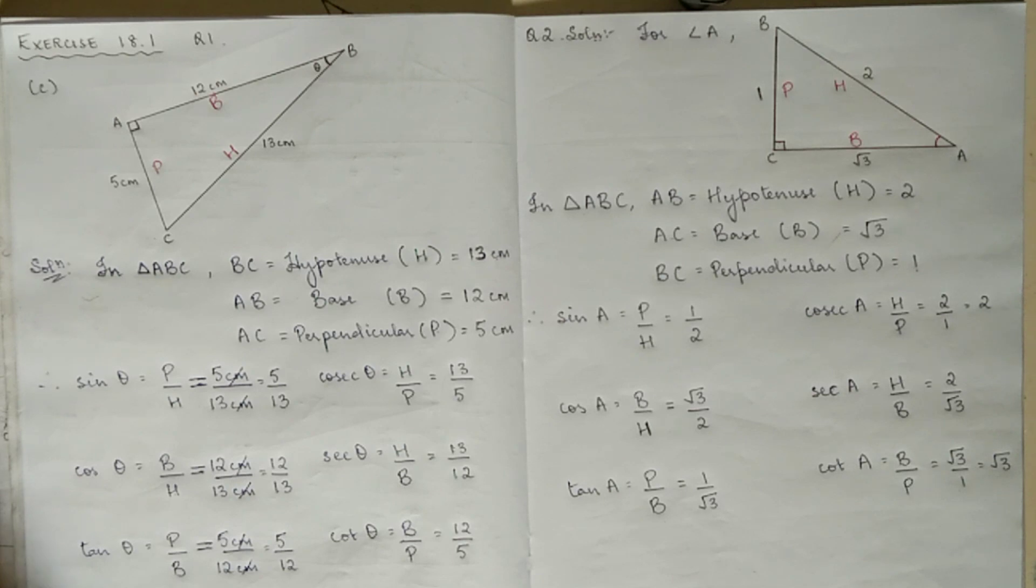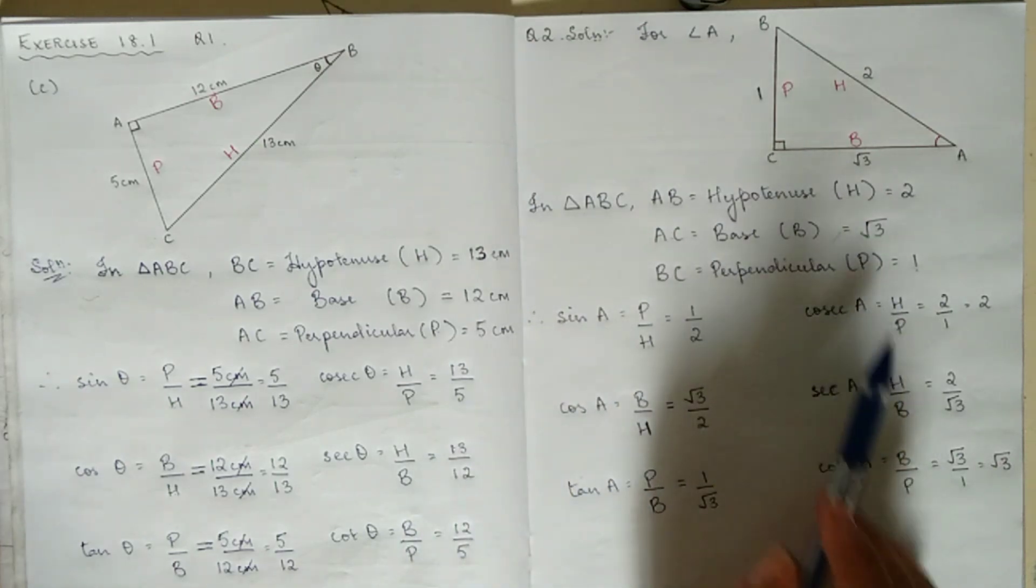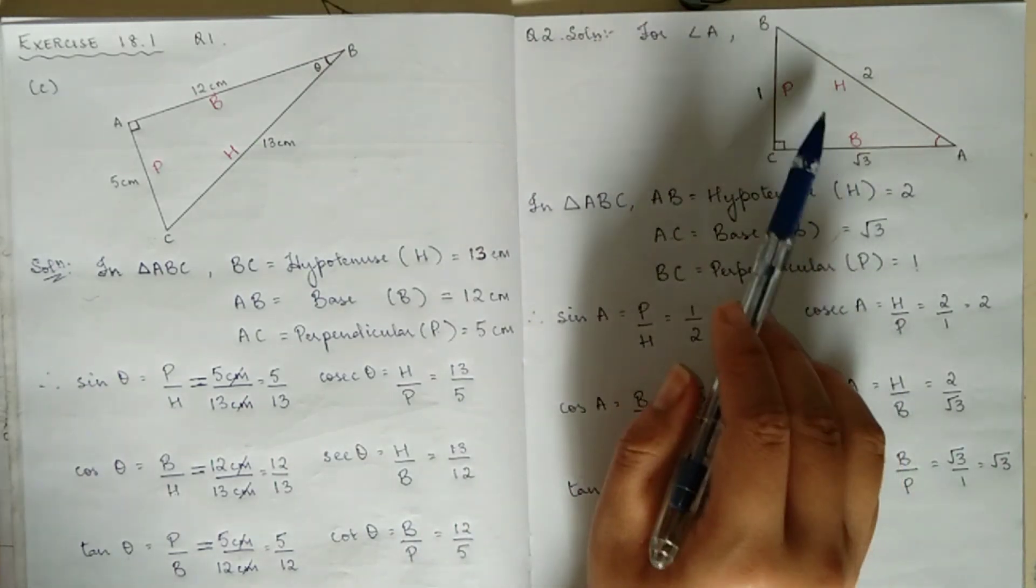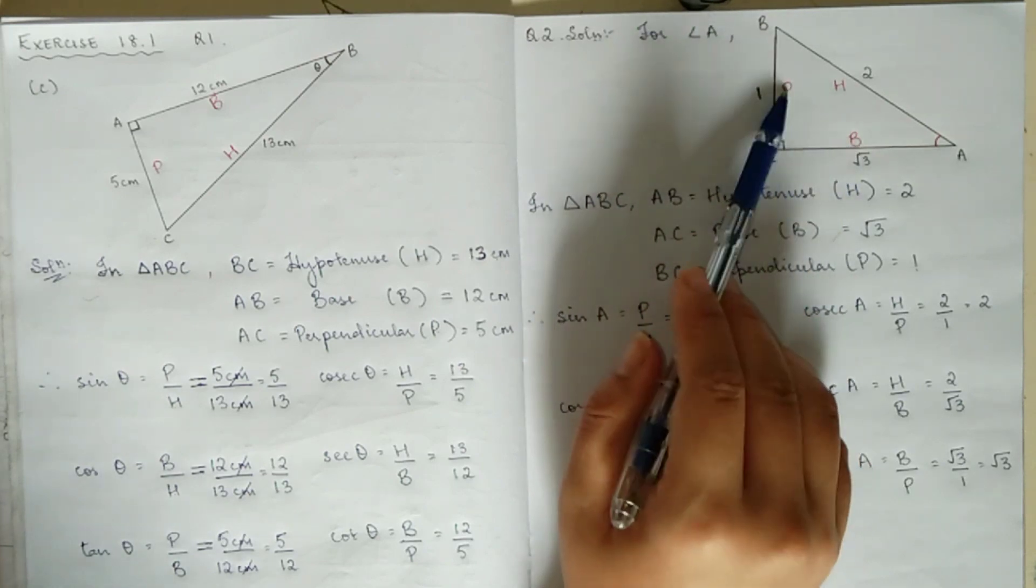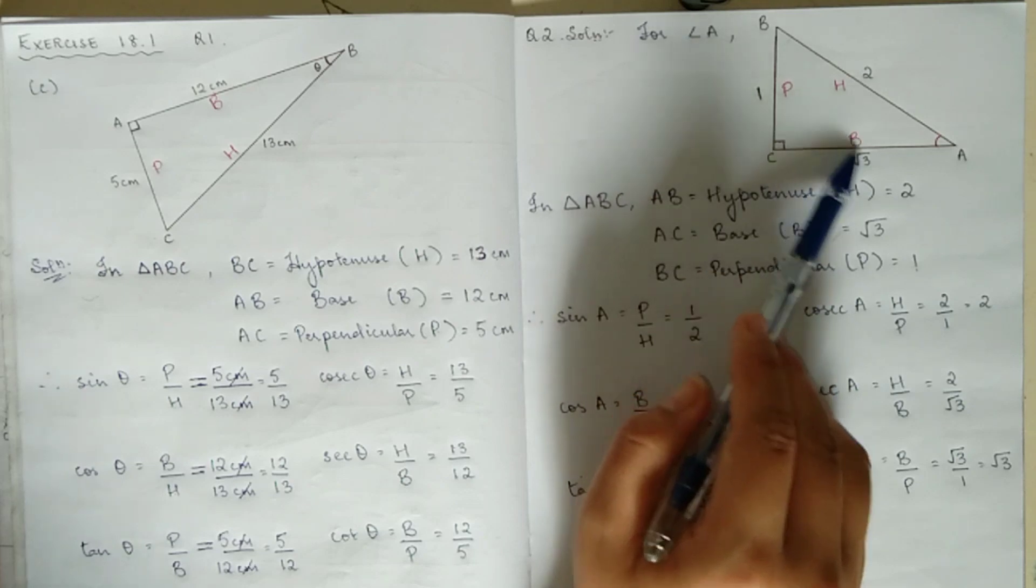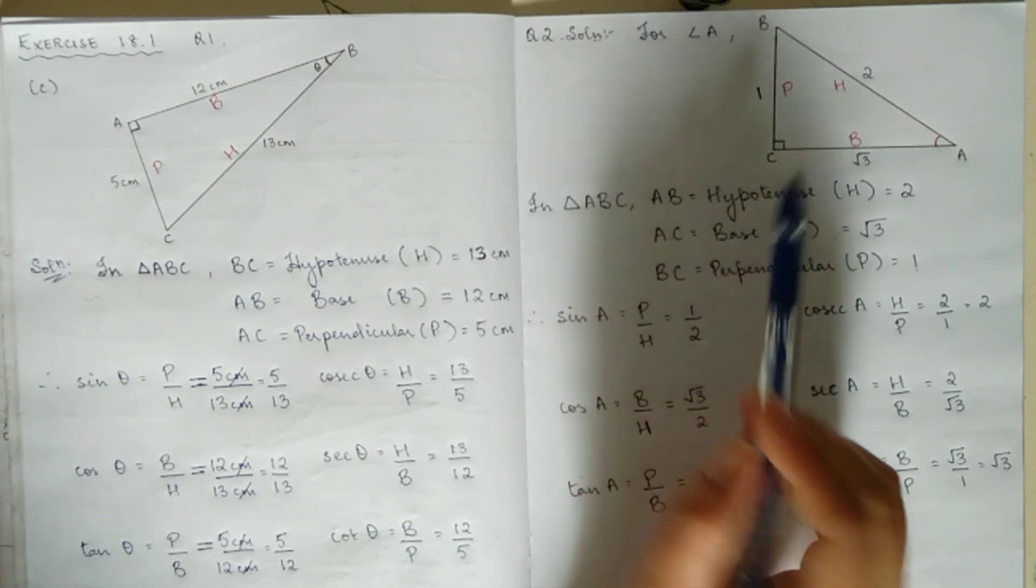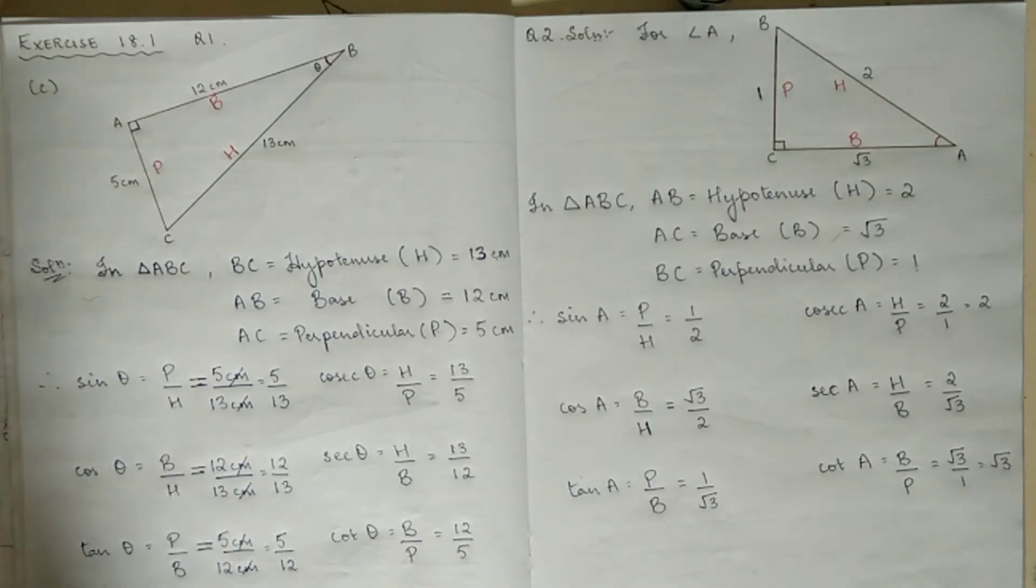Now you will do for angle B. For angle B, the diagram is different, so sin A and cos A will switch. Sin B and cos B use angle B instead of angle A. Using that, you will write down what is P, H, and B, and write the rest. You can do it on your own. All the best!